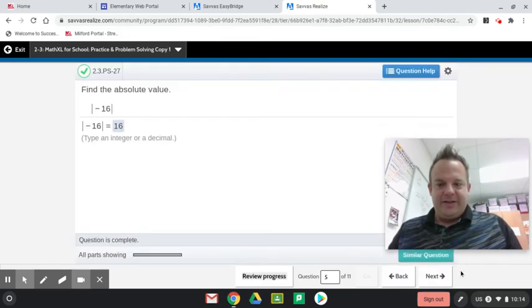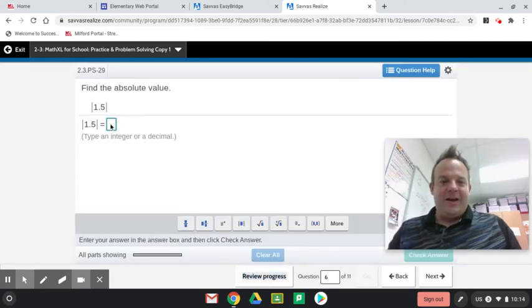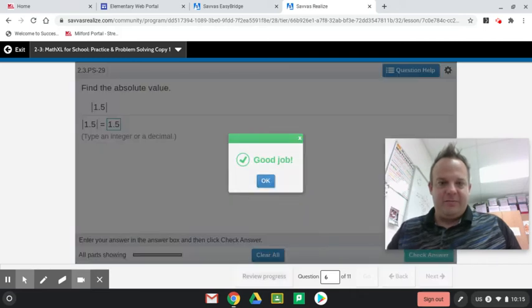Absolute value is the distance from 0. Absolute value, distance from 0. More times you hear that, right, the better. Absolute value of 1.5. Well, that's 1.5 away. Notice how all these are pretty much positive.